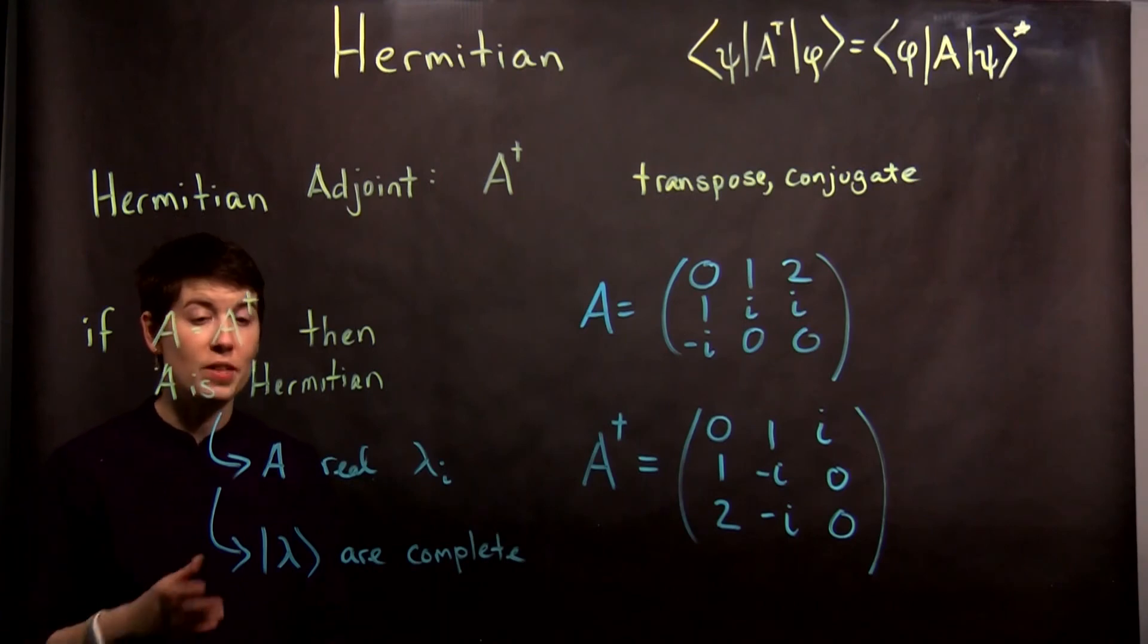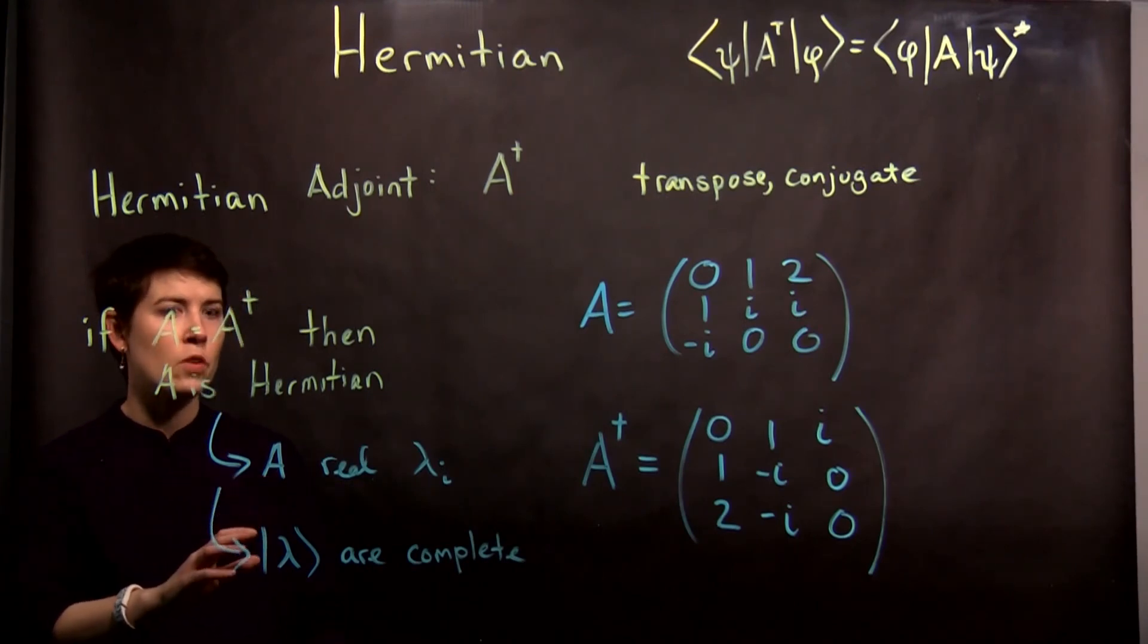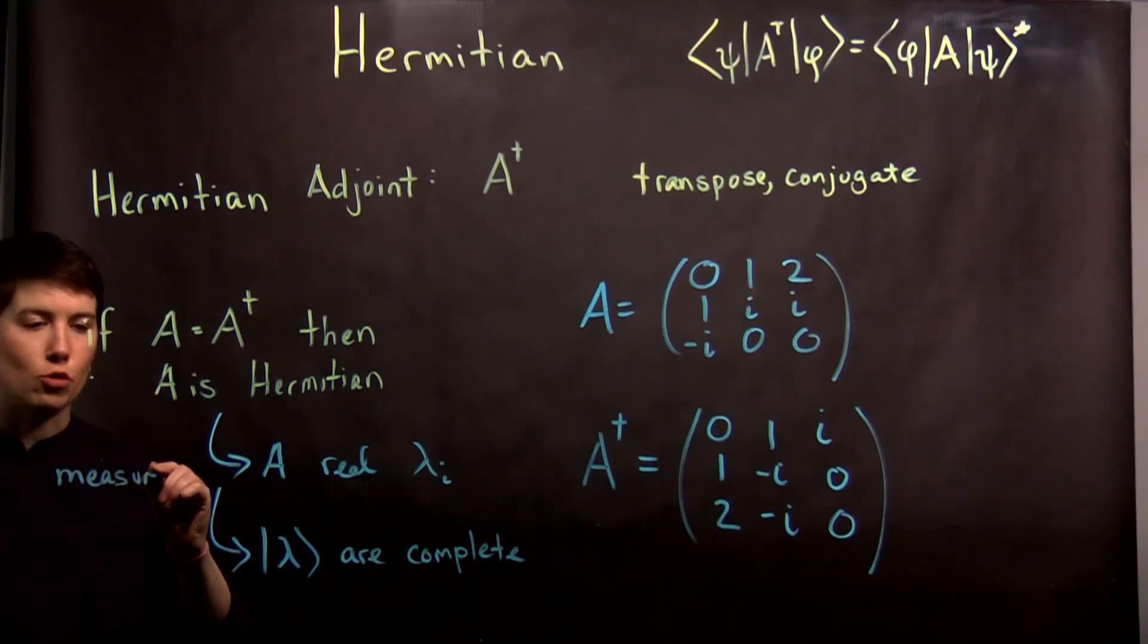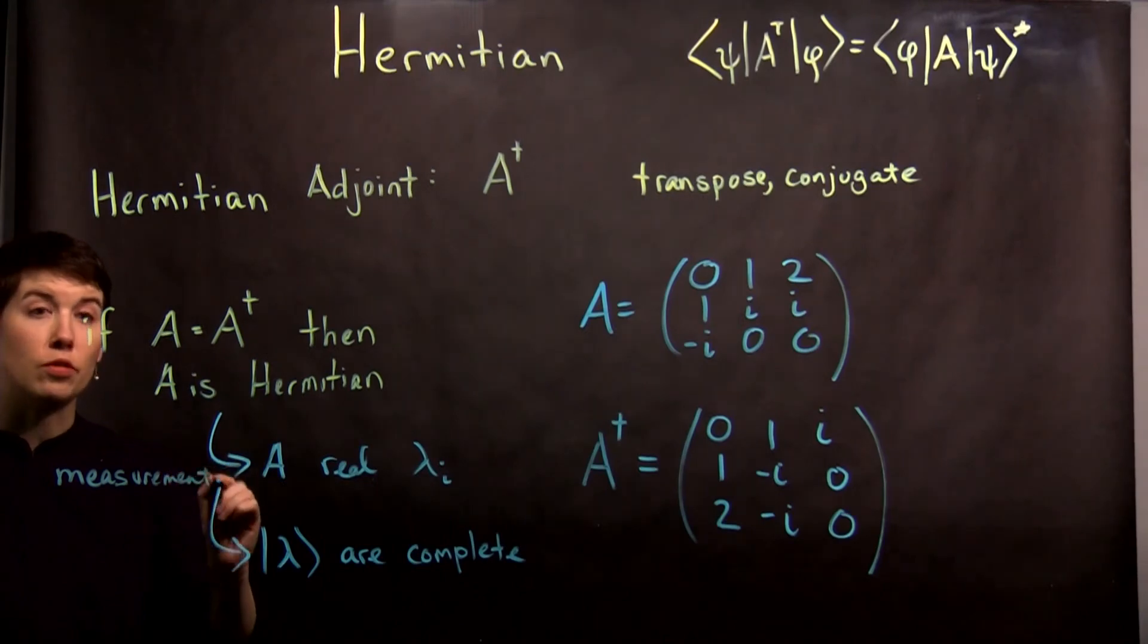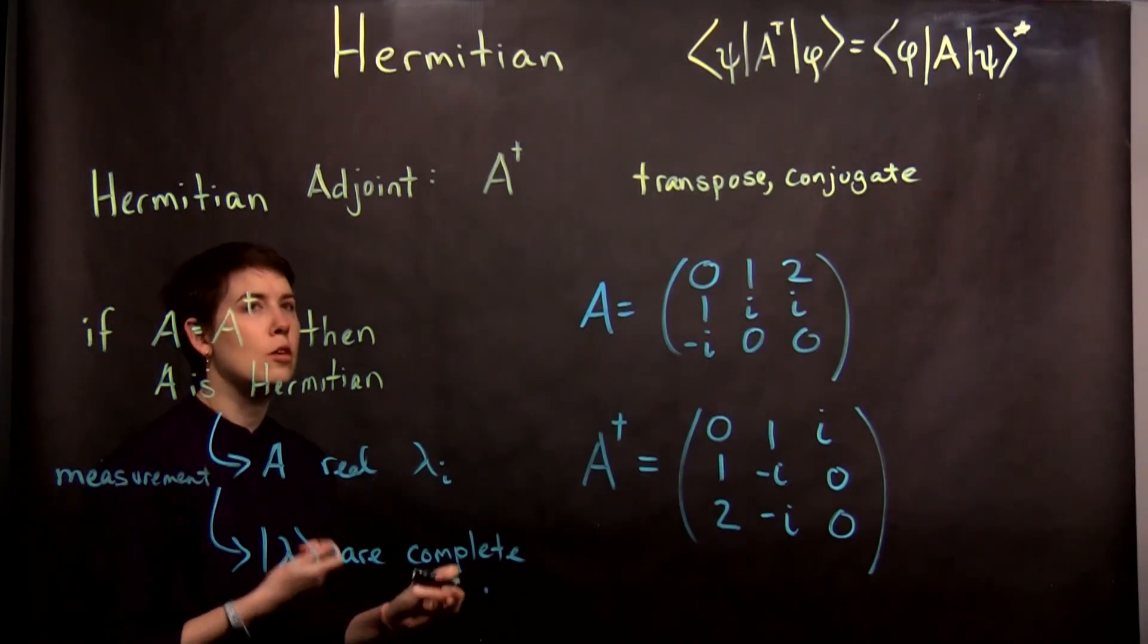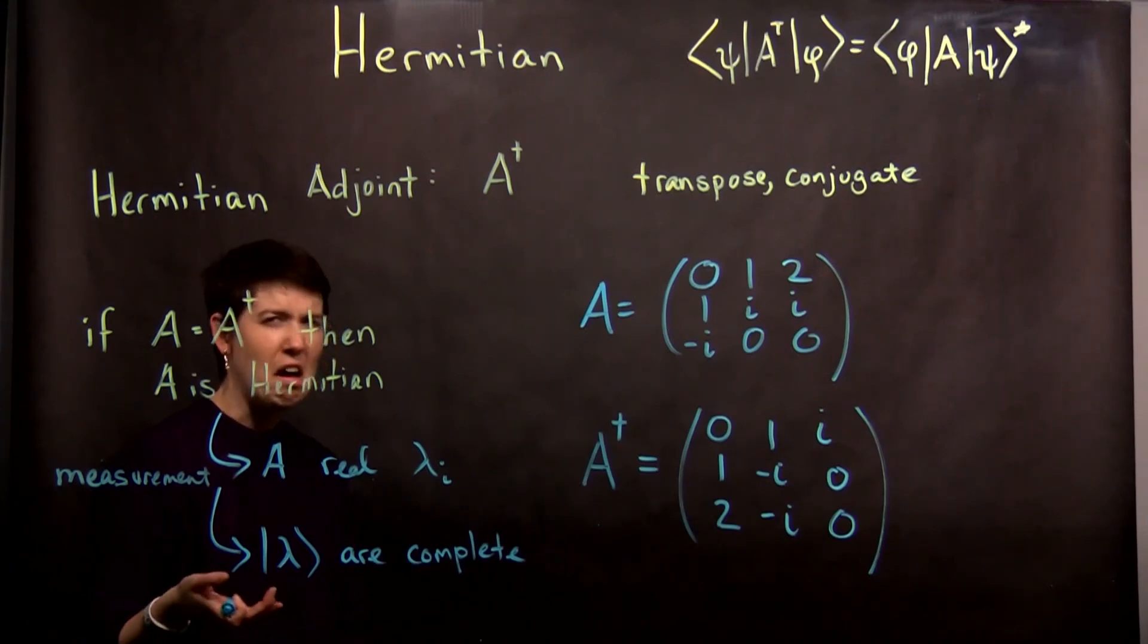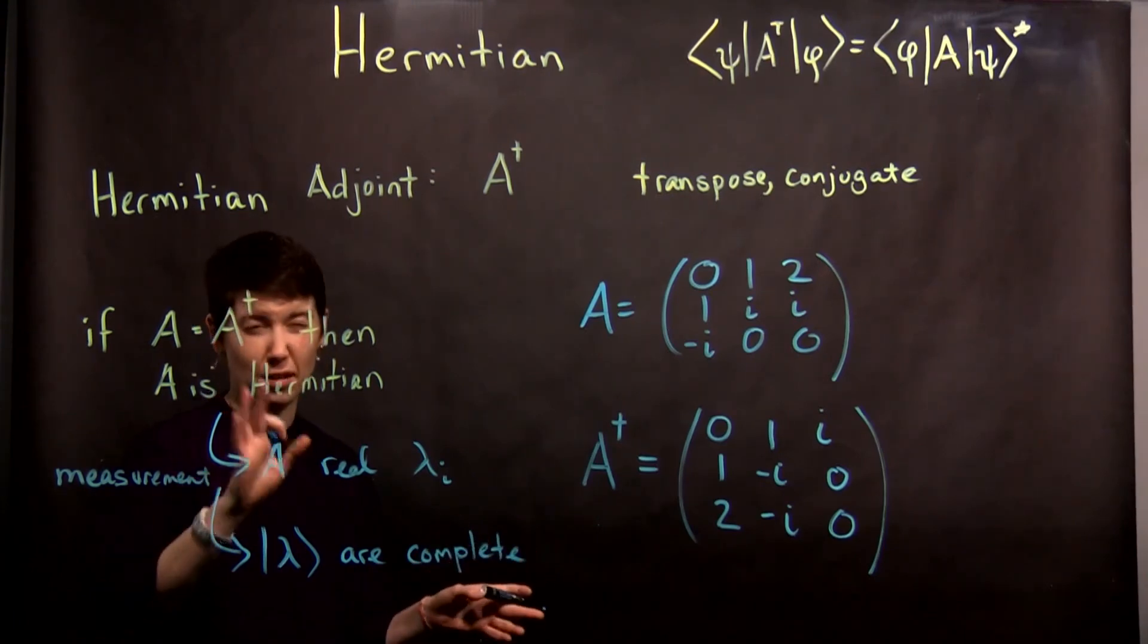So that's really helpful because that means it spans the space. And the real observables is nice because this means that this is going to correspond to measurement. So observable, right? I can observe two apples. I can't observe i apples. That's one way to kind of just remember this.